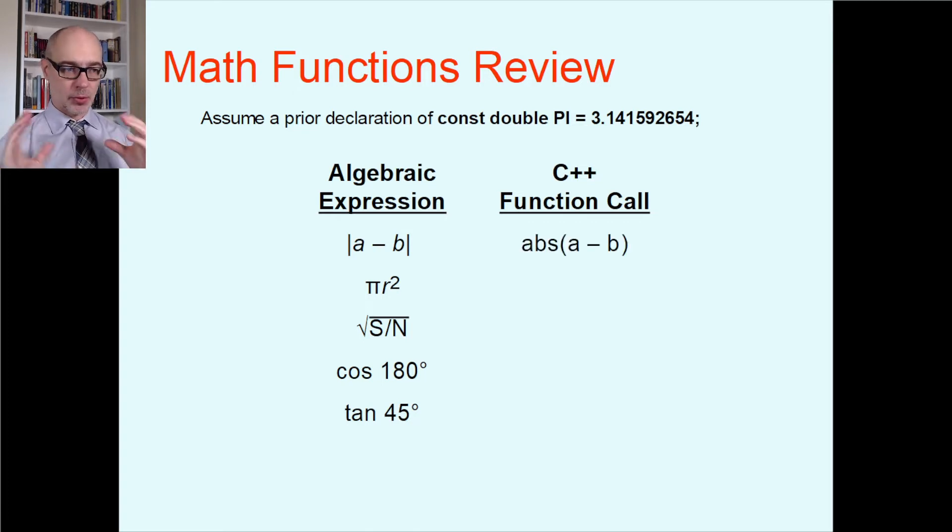So what I want to do here is call the abs function for absolute value. I would write abs(a - b), and that would compute a minus b, send it into the absolute value function, strip off any negative at that point, and come back with the positive version of that number. So maybe you can answer the other ones. Maybe pause the video here, see if you can write down the C++ version of these other mathematical expressions, and when you think you have the answers, restart the video, and we'll see if we agree.